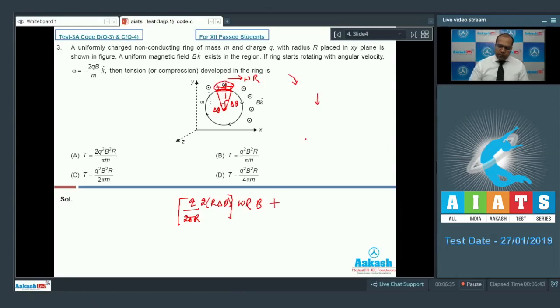That is the magnetic force acting towards the center, plus component of tension. Since the tension force on the considered element will act in this way. So if I take the component, then the net force towards the center due to tension will be T into 2 times Δθ.